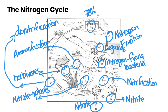So that is the complete nitrogen cycle. You can continue it over and over again, and that is how nitrogen gets fixed and used by various different living things within an ecosystem.